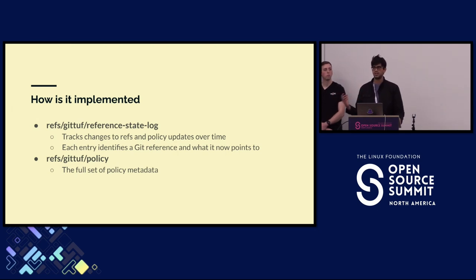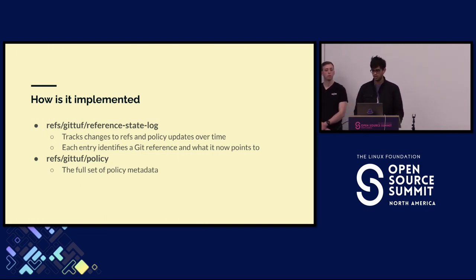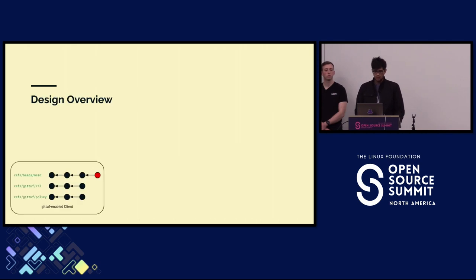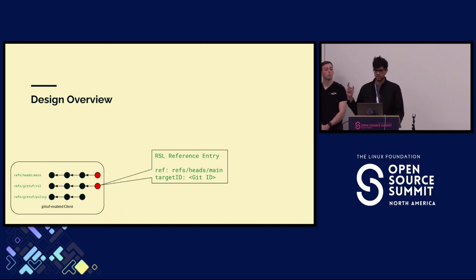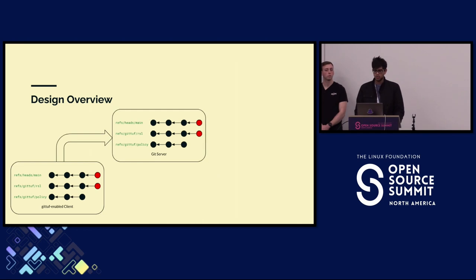If I have a GitTuff-enabled repository and I contribute a new commit to a branch and I'm about to push to our Git server so collaborators can get it, I create an entry in the reference state log — which is quite simple. It says the branch that's being changed and what it now currently points to. I sign the RSL entry with my key and push both up to the Git server. Because we're using the Git object store to store the extra metadata and custom Git references, it doesn't matter if the Git server is aware of GitTuff or not — as far as the Git server is concerned, it's just getting pushes to two different namespaces.